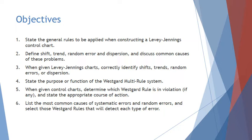The objectives for today's lecture are: 1. State the general rules to be applied when constructing a Levy-Jennings control chart. 2. Define shift, trend, random error, and dispersion, and discuss common causes of these problems. 3. When given Levy-Jennings charts, correctly identify shifts, trends, random errors, or dispersion. 4. State the purpose or function of the Westgard multi-rule system. 5. When given control charts, determine which Westgard rule is in violation, if any, and state the appropriate course of action. 6. List the most common causes of systematic errors and random errors, and select those Westgard rules that will detect each type of error.